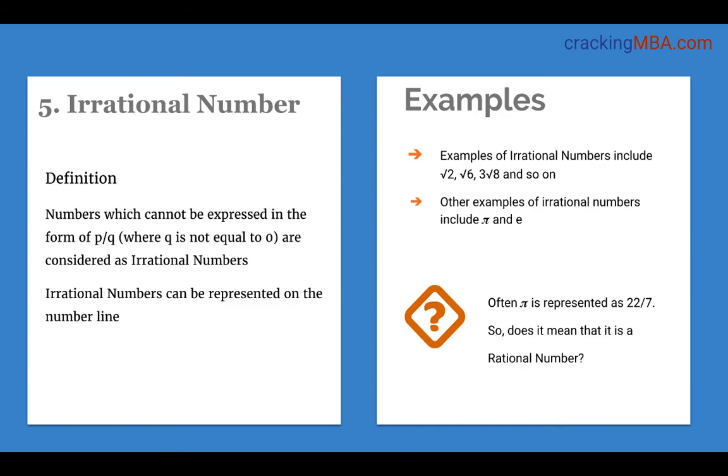Often we see that pi is generally represented as 22 by 7. For example, when we say circumference of a circle we say 2 pi R and we say 2 into 22 by 7 into R. So does it mean that if I can represent it as P by Q it is also a rational number? The answer is it is not a rational number because it is just an approximation to 22 by 7. The exact value is not 22 by 7. Hence, pi is an irrational number.